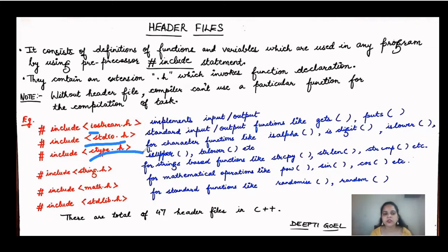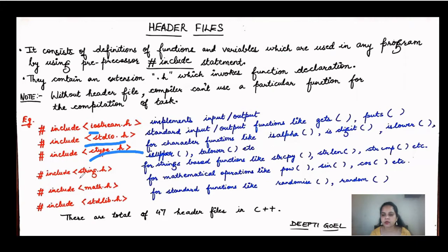The next type is ctype.h — 'c' stands for character. When we have to work with any character type we use this header file. For example, if we have a character variable and want to check whether it is alpha, whether a digit is greater or less than zero, functions like isdigit, islower, isupper, toupper — these character functions execute only if we include ctype.h.